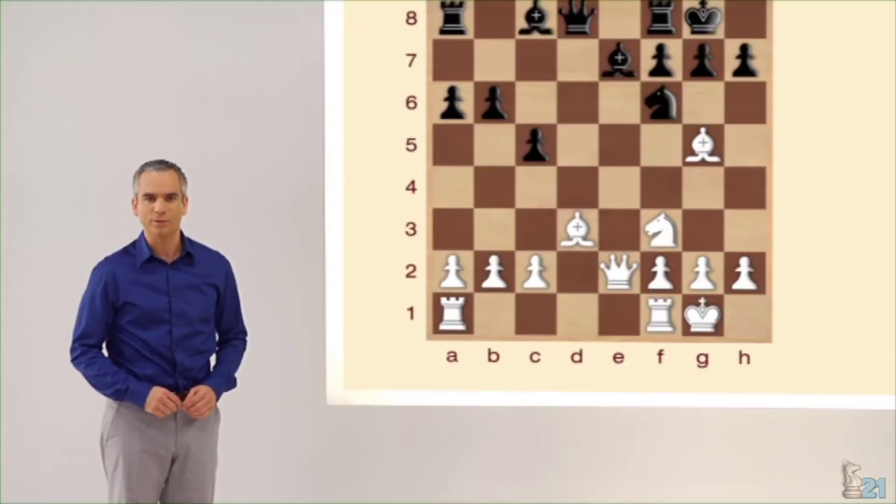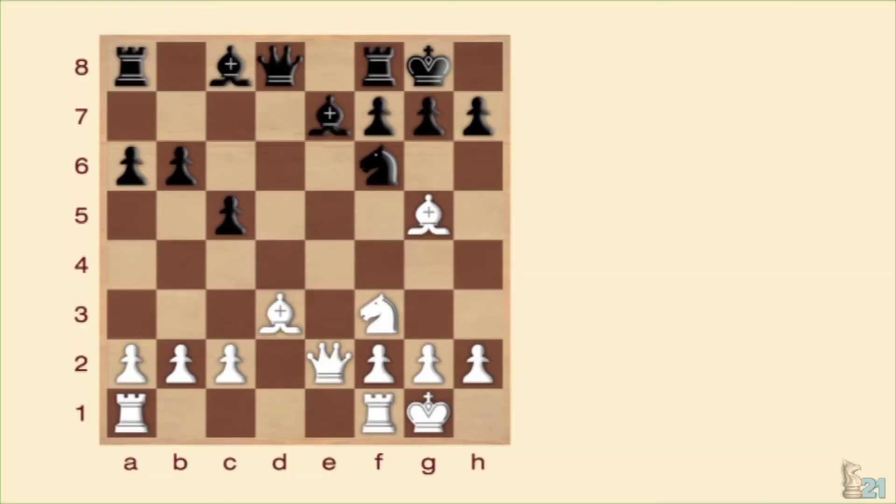¿Qué tal ha ido? ¿Resolvemos? Fijaos. Buscamos la manera de tomar la torre indefensa situada en A8. Para atacarla, deberíamos jugar dama a E4 y a la vez amenazaríamos mate en H7. Pero el caballo situado en F6 nos lo impide, ya que defiende el peón de H7 y la casilla a E4.